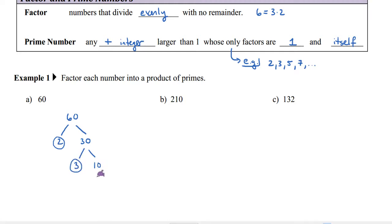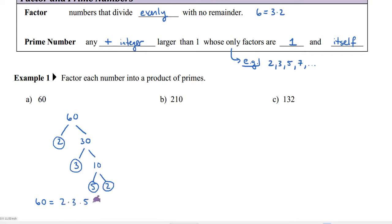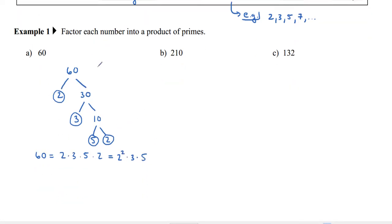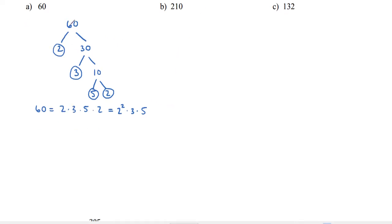Thirty can be broken up as 3 times 10. Three is a prime number, but 10 is not. Ten can be broken up as 5 times 2, and both 5 and 2 are prime. So 60 equals 2 times 3 times 5 times 2. We can group these: 2 appears twice so that's 2 squared, 3 appears once, and 5 appears once — giving us 2 squared times 3 times 5.